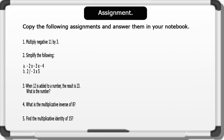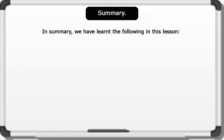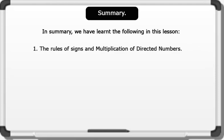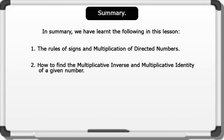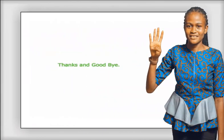Assignment: pause the video, copy the following assignment, and write the answers in your notebook. In summary, we have learned the following in this lesson: the Rules of Signs and Multiplication of Directed Numbers; how to find the Multiplicative Inverse and Multiplicative Identity of a Given Number; and Division of Directed Numbers. I believe you enjoyed this lesson — see you in our next one. Thanks and goodbye.